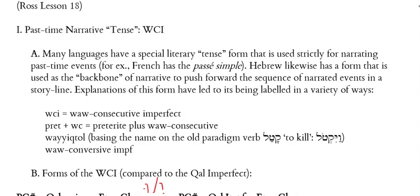Others like to just call it a vayiktol form. Vayiktol is a rather nondescript term using the old paradigm verb katal, which means 'to kill,' in the form this tense takes. With a special vav with the patah and a doubling dot, and then what looks like the imperfect — yiktol would be 'he will kill,' vayiktol would be translated as 'he killed' as a past-time form. So some grammarians just call this the vayiktol based on that paradigm form.